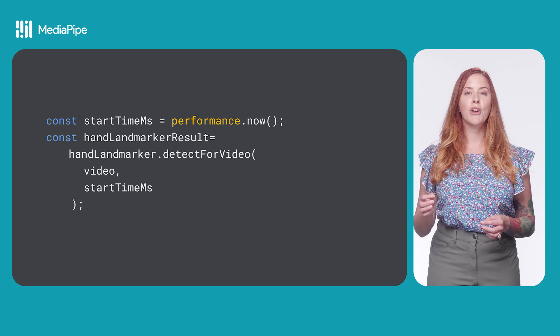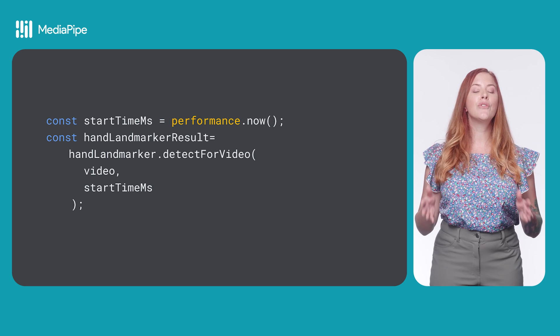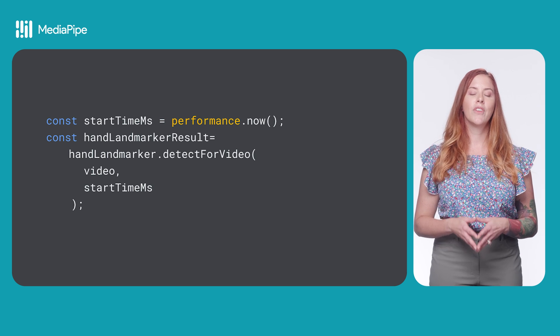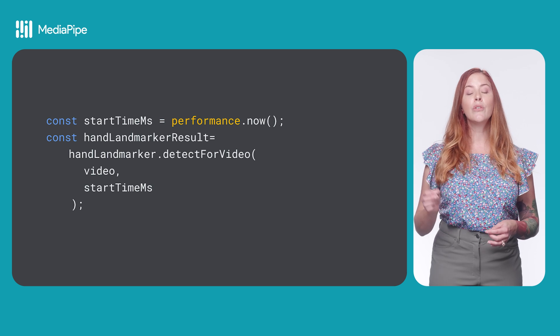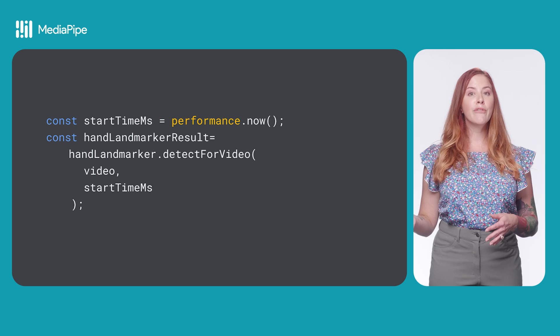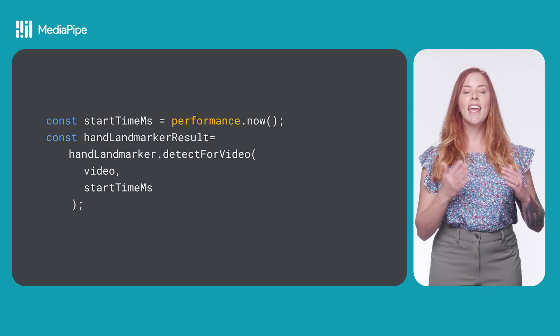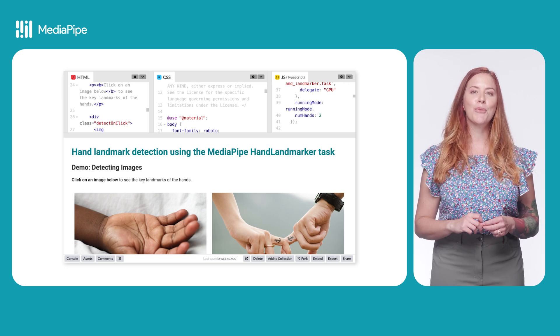To detect hand landmarks in frames of a video, get the current time using performance.now. Then get the hand landmarker result using the handLandmarker.detectForVideo method, passing your video element and the current time. With this code, you can get started with hand landmark detection in your own web app. You can check out a complete code example on CodePen.